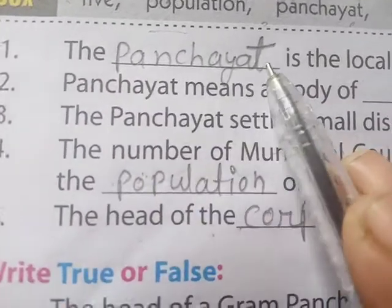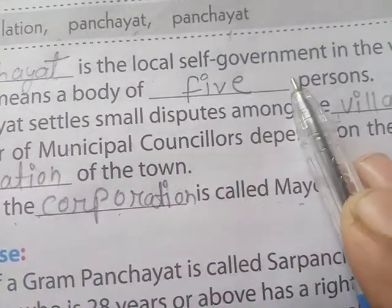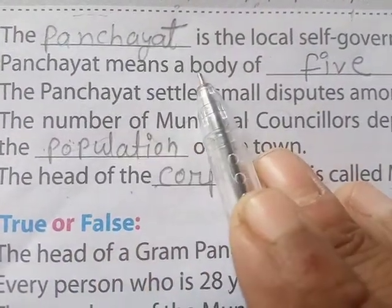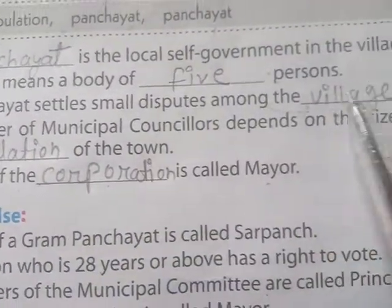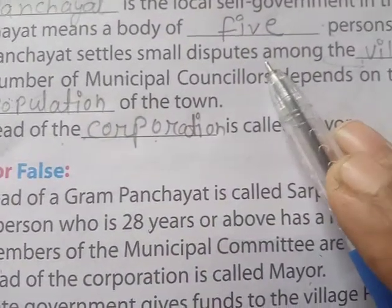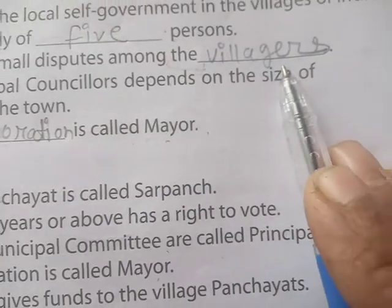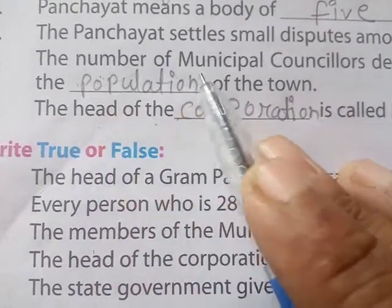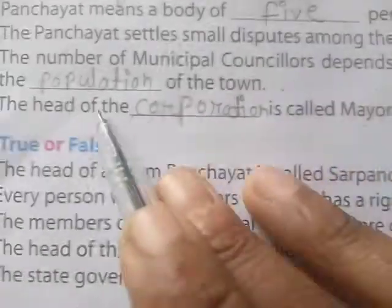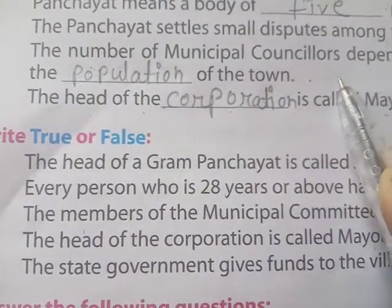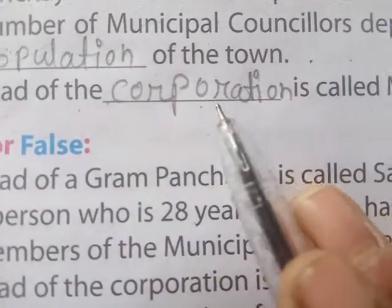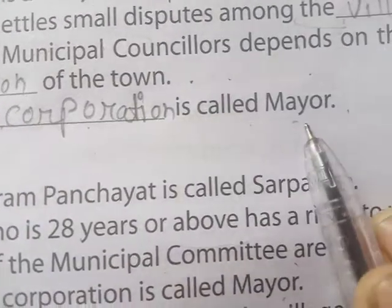Filling the blanks answers: First, the panchayat is local self-government in the village of India. Second, the panchayat means a body of five persons. Third, the panchayat settles small disputes among the villagers. Fourth, the number of municipal councillors depends on the size of the population of the town. Fifth, the head of the corporation is called mayor.